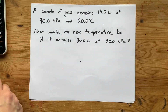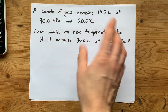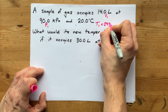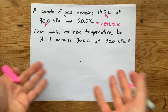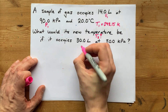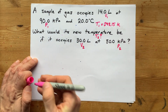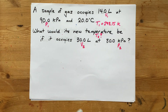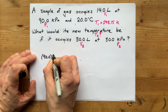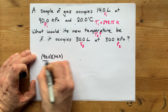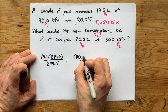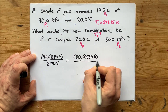This next question asks me for temperature. The sample of gas has the same initial conditions: V1, P1, and T1 is still 293.15 Kelvin — please remember to convert to Kelvin. Now we want to know what T2 is, but we're given the final volume and the final pressure. We're going to plug these numbers into the equation: P1 V1 over T1 equals P2 V2 over T2.